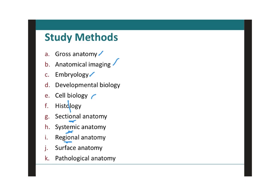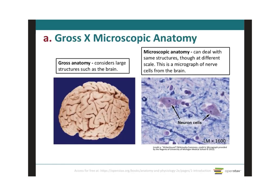Moving on, we'll define gross anatomy and different types of anatomical imaging. Two types of studies used for anatomy are gross and microscopic anatomy. Gross anatomy considers large structures — such as the brain — and you don't really need equipment to study them. However, in microscopic anatomy, you study the same organs but need a microscope to look at the cells of the brain. Here we can see neuron cells and also glial cells surrounding the neurons.